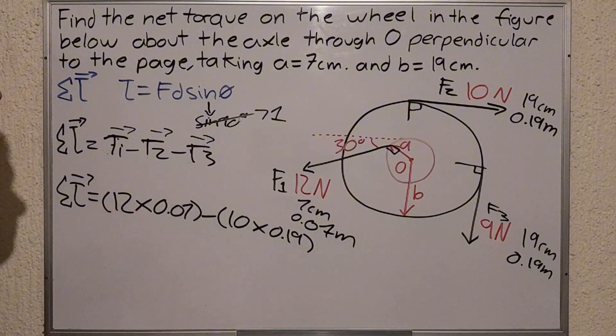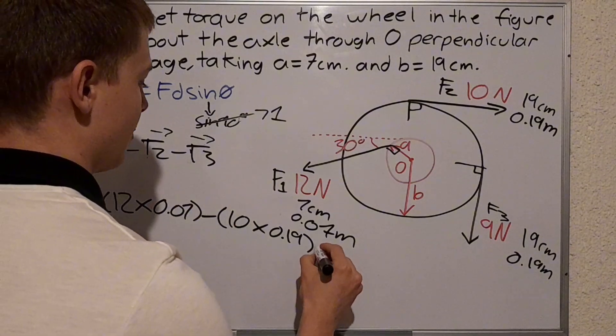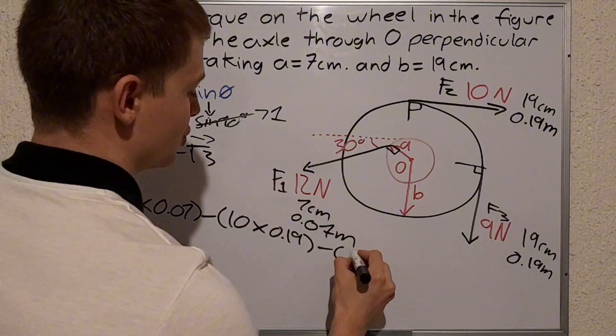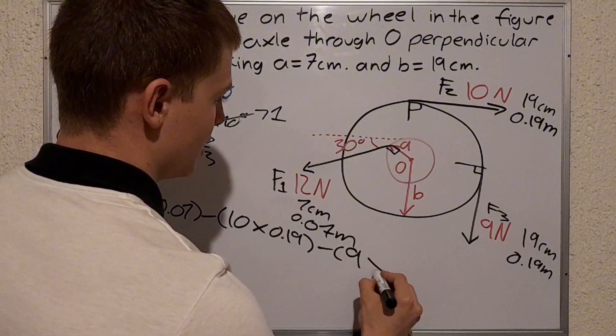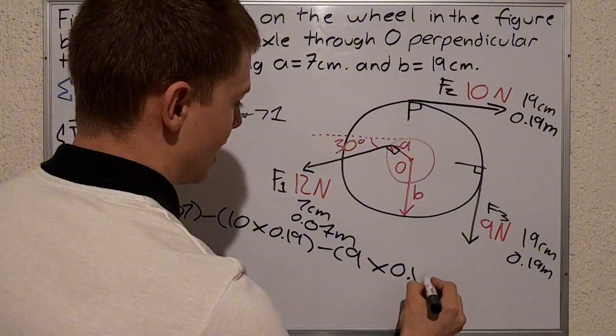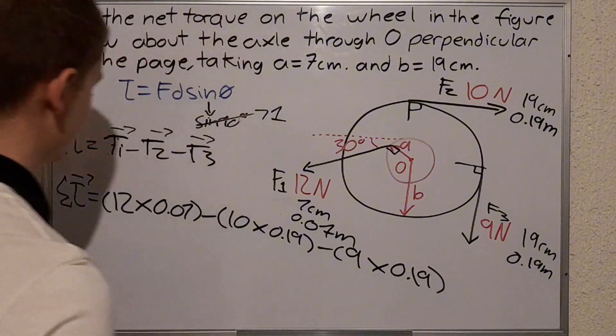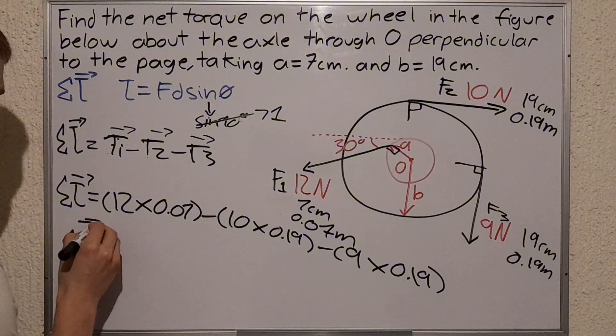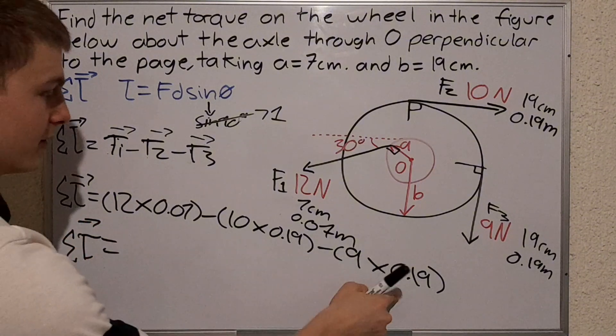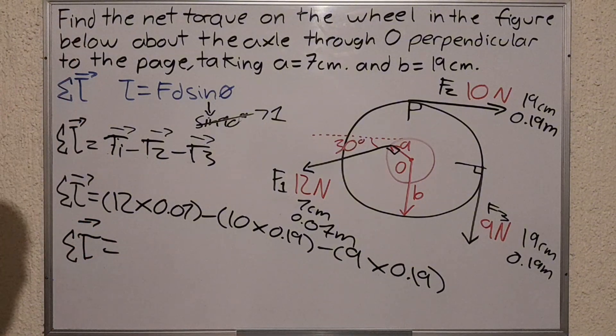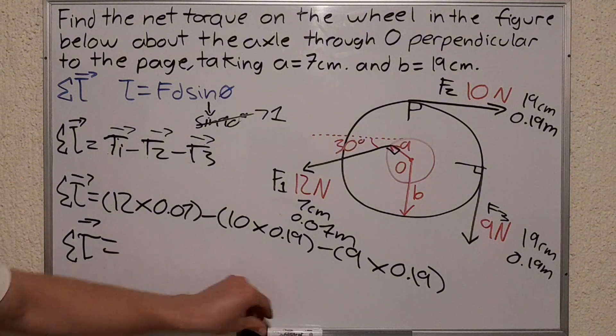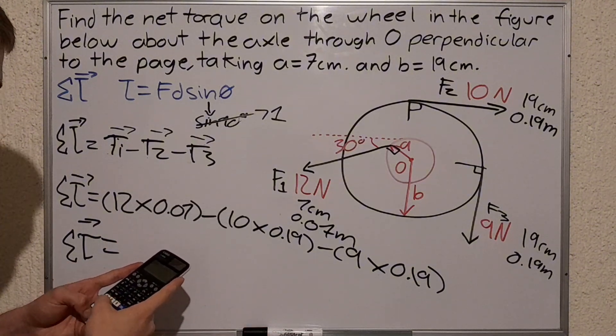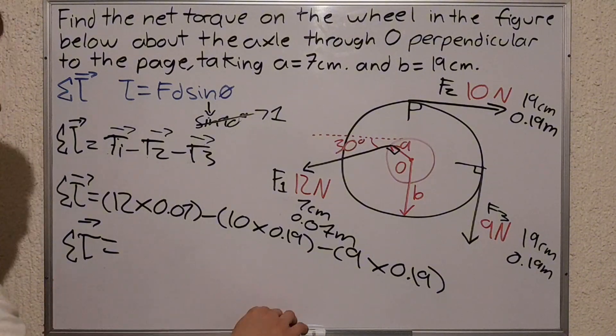And then T3 which is 9 newtons times 0.19 meters. Now finding the net torque would be just solving this operation, which I will plug into the calculator: 12 times 0.07 minus 10 times 0.19 minus 9 times 0.19, which gives me negative 2.77 newton meters.